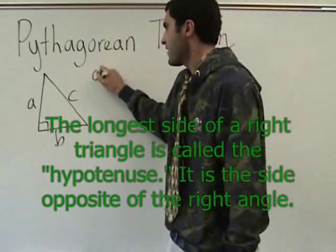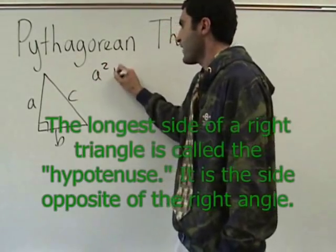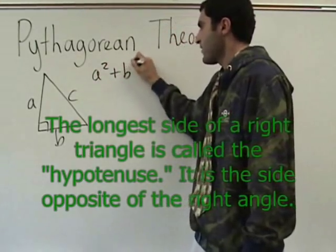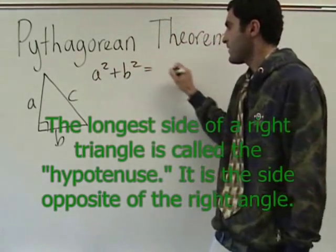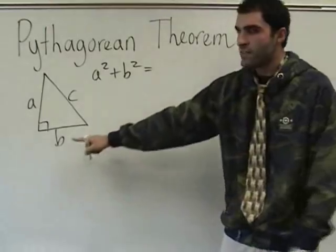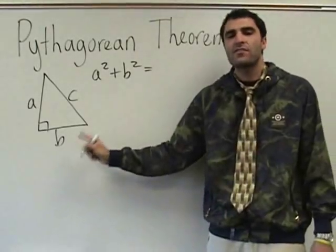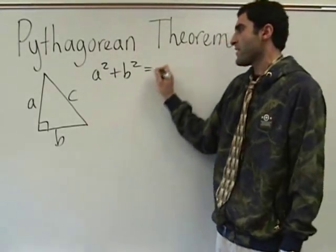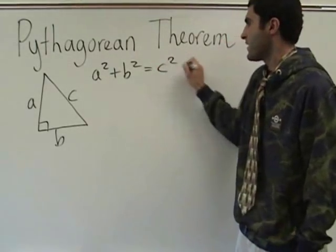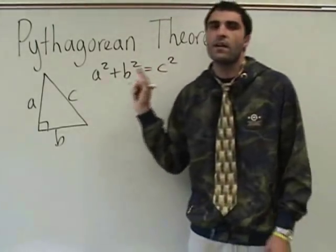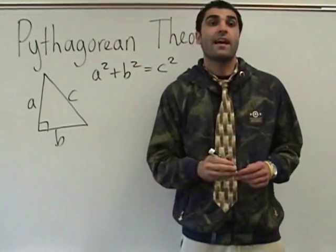The formula is: whatever A is, you square it. Whatever B is, you square it. Whatever C is, you square it, and this formula will come to life.